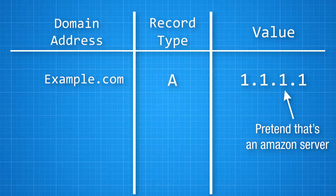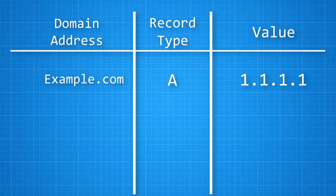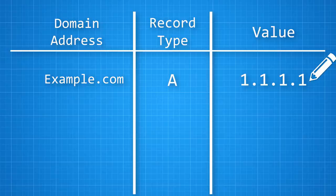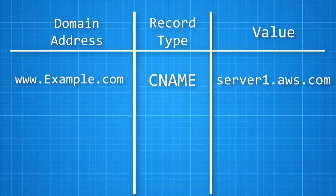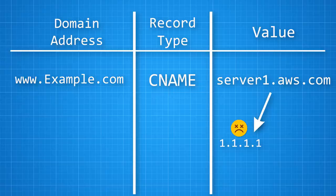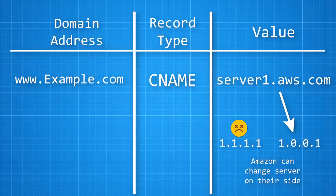Say for example you're using Amazon Web Services to host your website and you're given a specific server. If you use an A record, it's going to point to a specific IP address for that server. It'll work fine until potentially there's an overload or the server goes down, at which point you'd have to go into your own website's DNS records, fix it, and assign it to a different server — Amazon can't do anything about it. Instead, you could set your DNS record to a CNAME such as server1.aws.com. That way Amazon can detect the original server is down and change server1.aws.com to redirect to a backup server. You don't actually have to do anything — Amazon handles the switching without changing any IP addresses; they just change where that name points to.